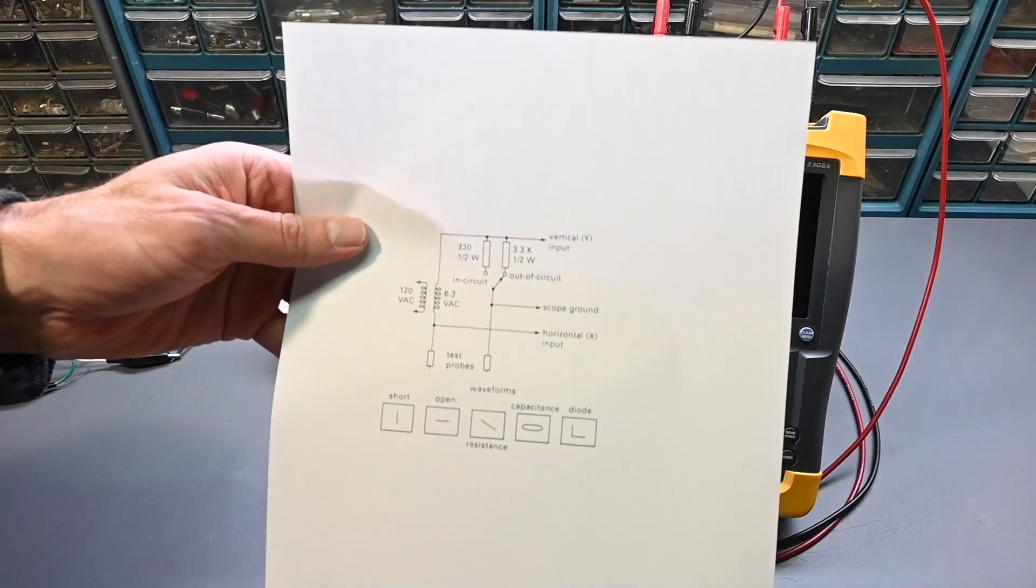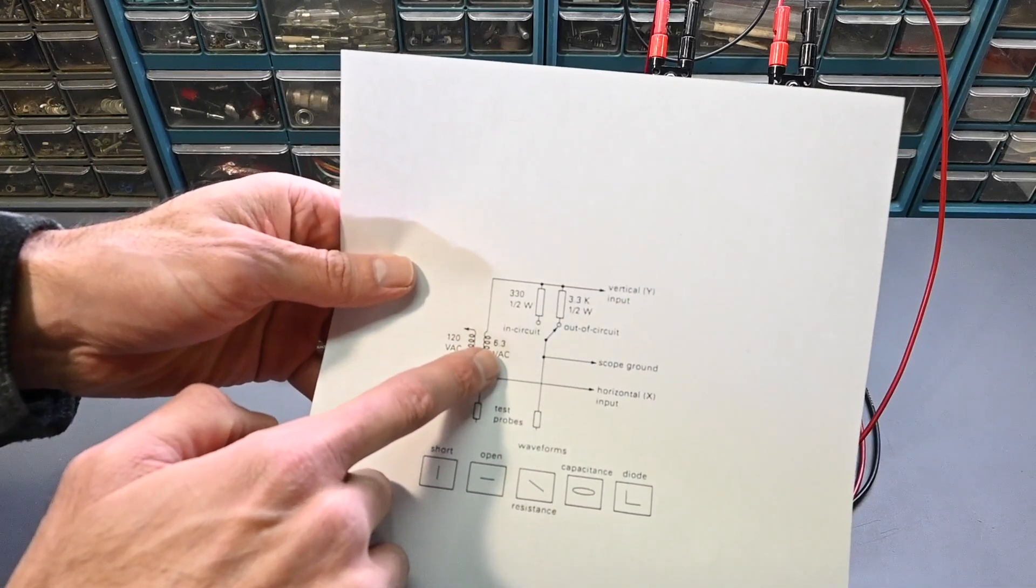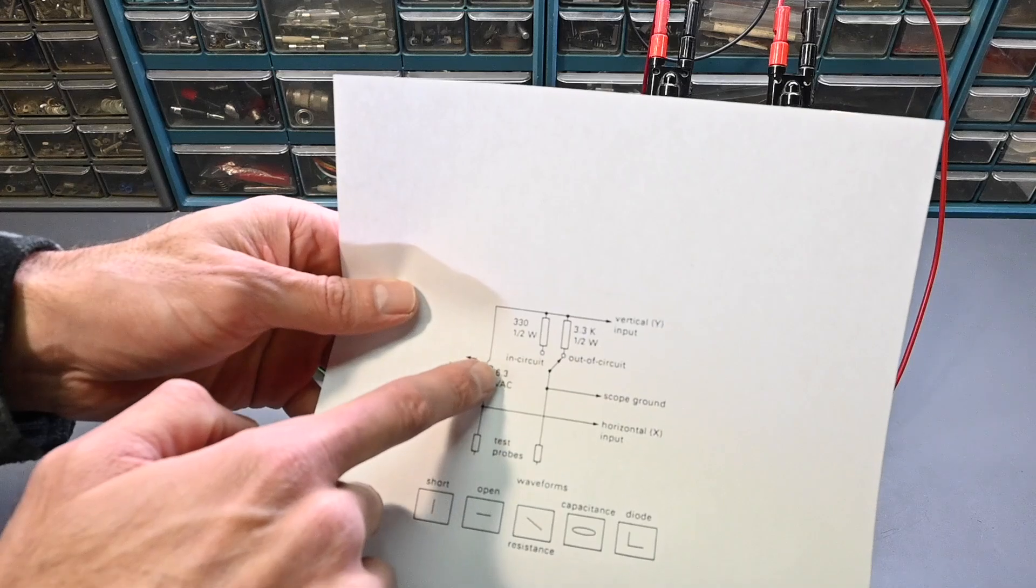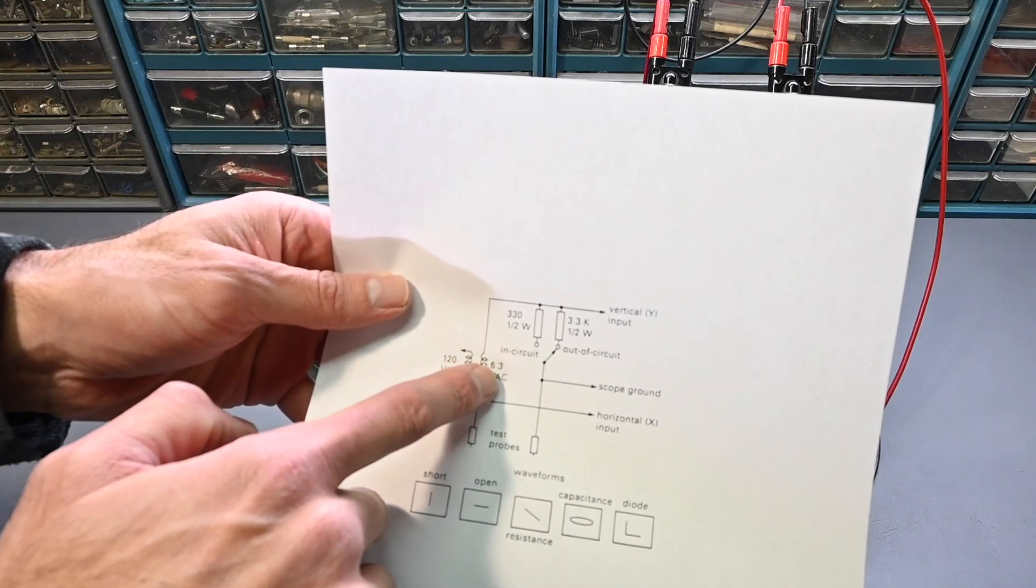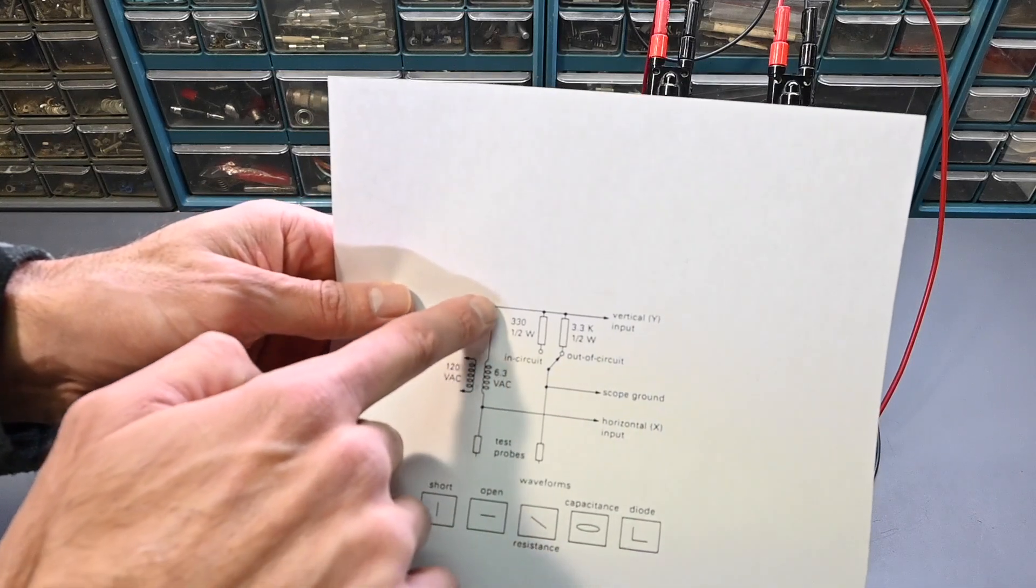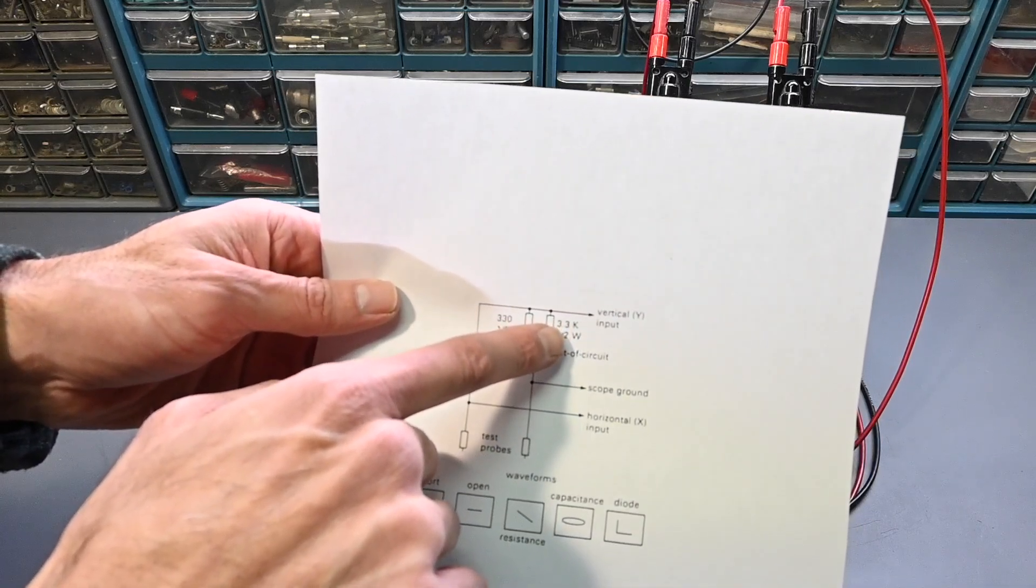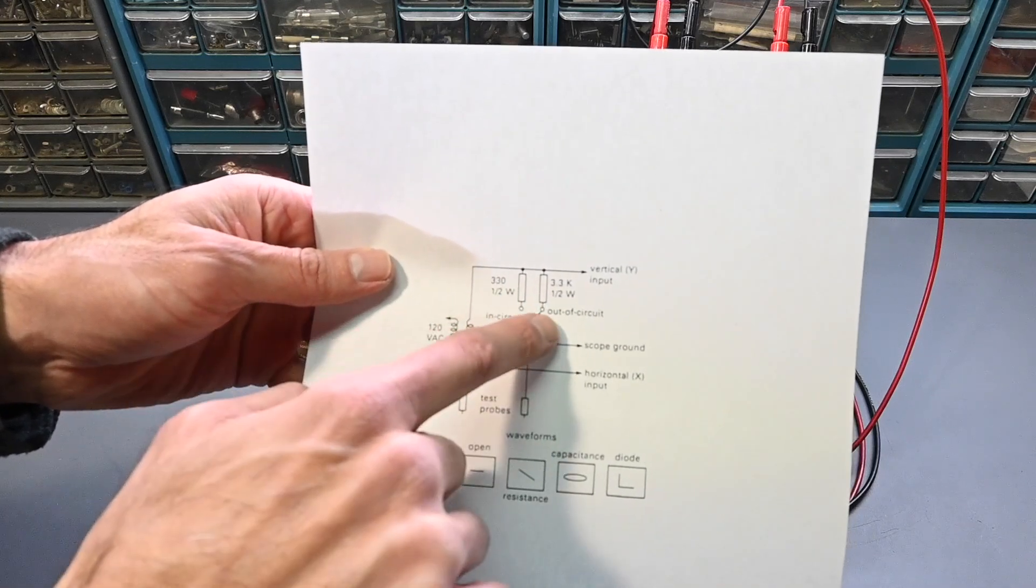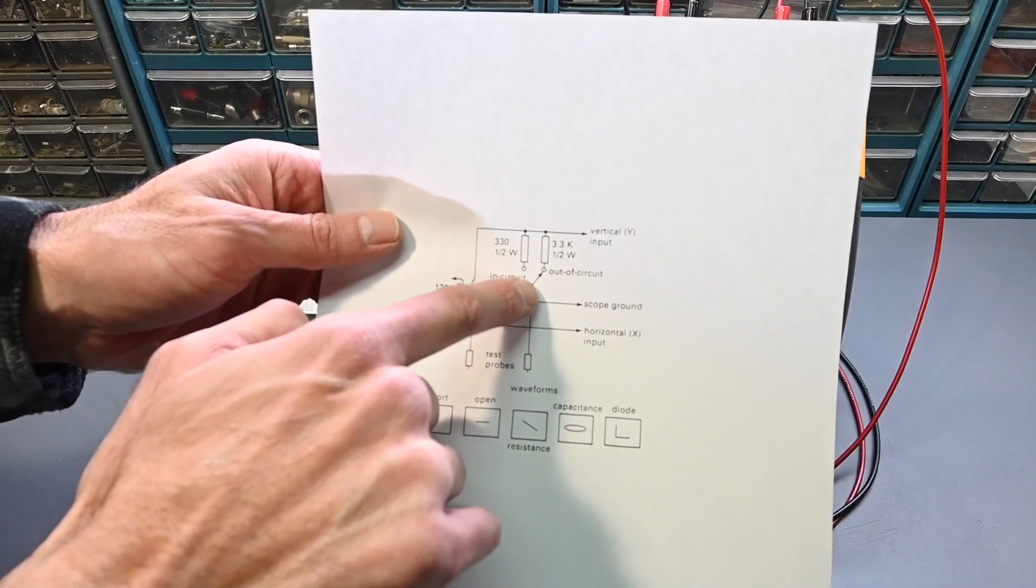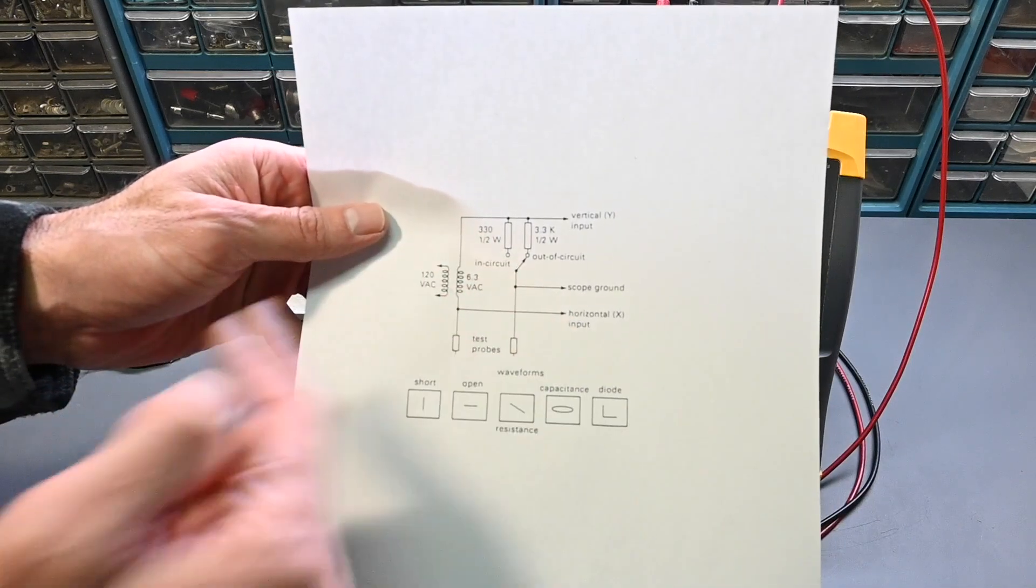It's a very simple circuit. The transformer is 120 volts AC on the primary and 6.3 volts AC on the secondary. If you're in a country that has 240 volts on the mains as standard, use an appropriate transformer. This 6.3 volt AC secondary voltage could vary. You could use 5 volts or maybe up to 9 volts, something in that range is perfectly fine. This connection goes to two different resistors and then to the vertical or Y input on the oscilloscope. I'm only using one resistor, this 3.3k ohm half-watt resistor, and you can see it says out of circuit testing. If you want to do in-circuit testing, you can add an optional switch and another resistor, a 330 ohm half-watt. But I've omitted that resistor and switch for this test setup.